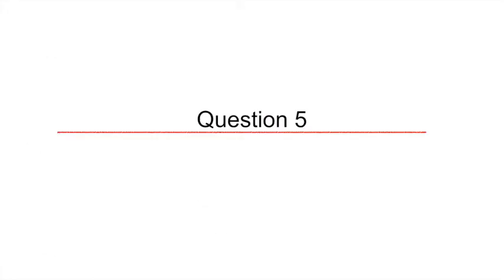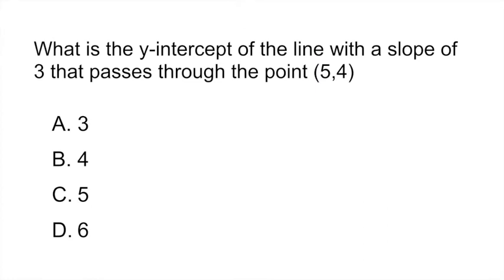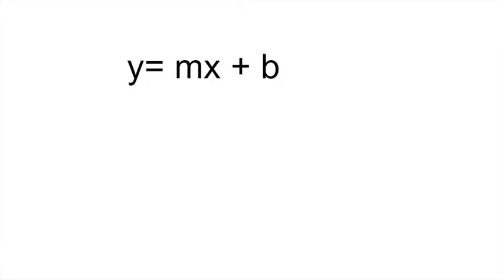The final question, question 5, is one that looks at the slope intercept. It says what is the y-intercept of the line with a slope of 3 that passes through the point 5, 4. So first of all we have to remind ourselves of this formula, which by the way you don't have to memorize because it will be provided for you in your formula sheet, but you do need to understand what it represents, what the different letters mean.